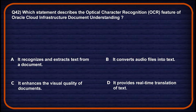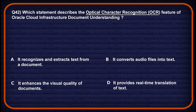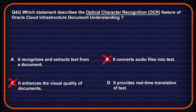Question number 42: which statement describes the OCR feature of Oracle Cloud Infrastructure document understanding? Option A: it recognizes and extracts text from documents — OCI OCR identifies and digitalizes text from document images, so this might be a potential answer. Option B: it converts audio files into text — audio transcription is unrelated to OCR, which works on visual text, so wrong. Option C: it enhances the visual quality of documents — OCR does not modify visual quality; it extracts textual content, so wrong. Option D: it provides real-time translation — translation is not a built-in function of OCI's OCR feature, so wrong. Option A will be the correct one.